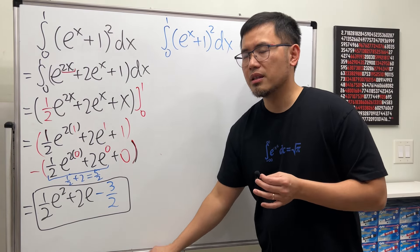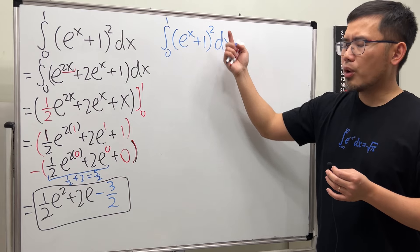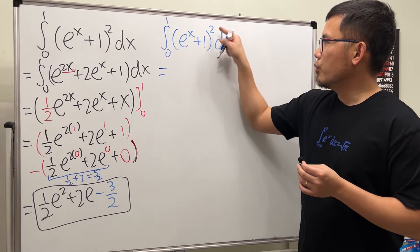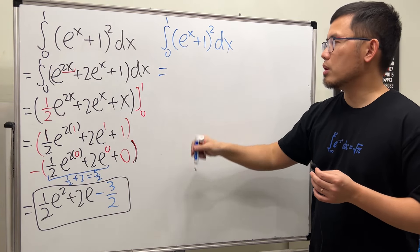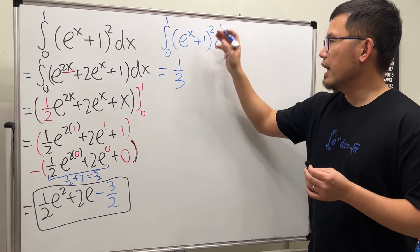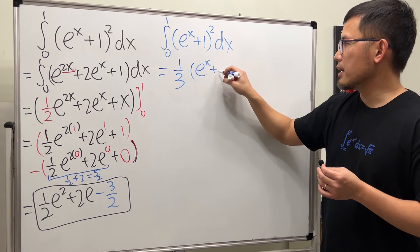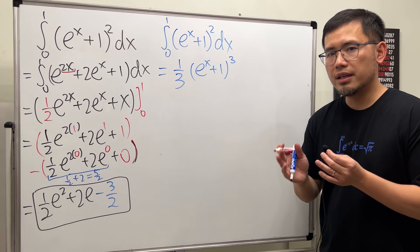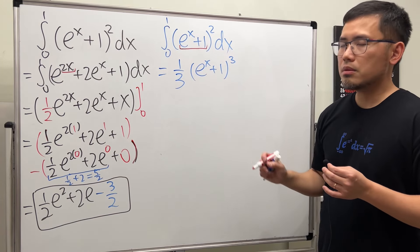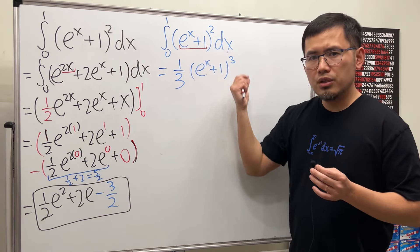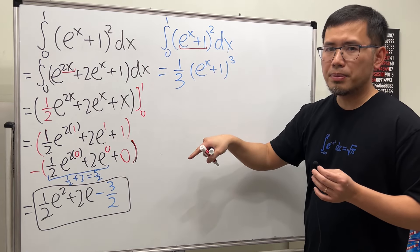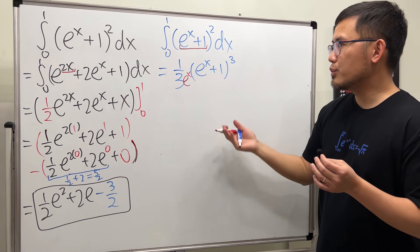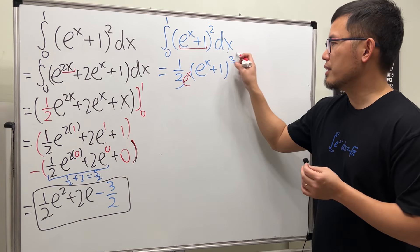But you might be thinking, we have this quantity to the 2nd power, could we just use the reverse power rule first? So we add 1 to the power, we get 3, divided by the new power, we will have 1 3rd, and then the quantity e to the x plus 1 to the 3rd power. But wait, maybe we still have to check the derivative of the inner function. What's the derivative of the inner function? E to the x, yes. So let's go ahead and divide it by the derivative of the inner function. That's the integration, so much easier. But I'll tell you, this right here is incorrect.